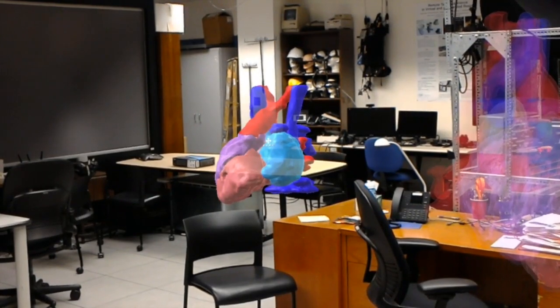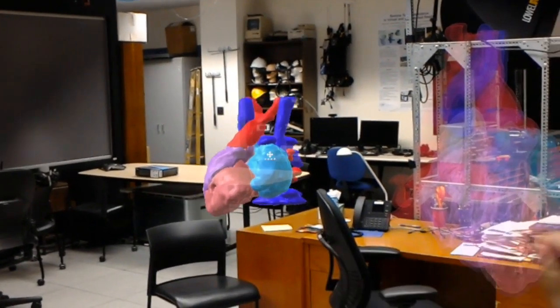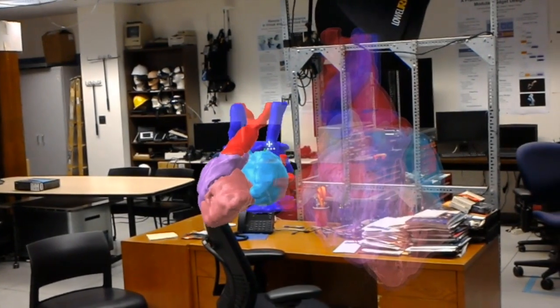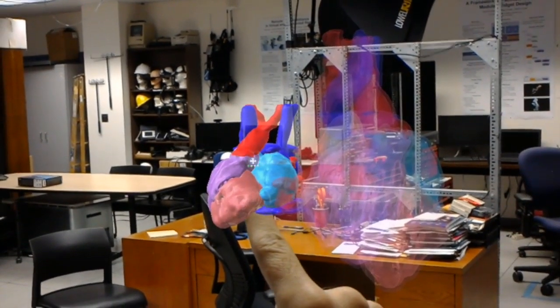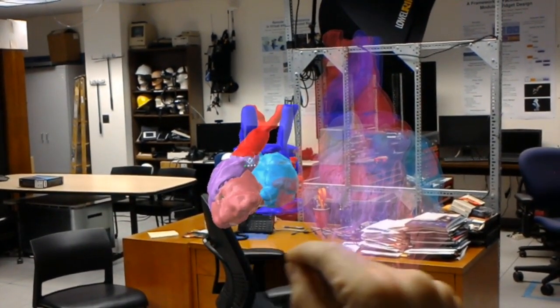This approach uses the Microsoft HoloLens' standard tap and hold gestures. When the HoloLens detects that the participant's hand is tapped to the model and is holding it, the selected transformation is applied to the model.